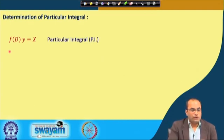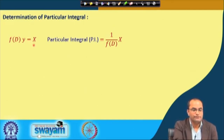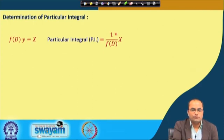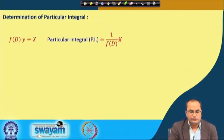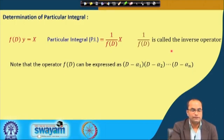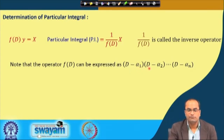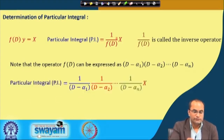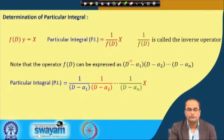The particular integral of this equation is denoted as 1/f(D) operated on X. Here 1/f(D) is like the inverse operator, and we get y = [1/f(D)] X as a solution. We will see how to operate 1/f(D) on a function X. The operator f(D) can be expressed in terms of (D − α₁)(D − α₂)···(D − αₙ), where these αs are the roots of the auxiliary equation.